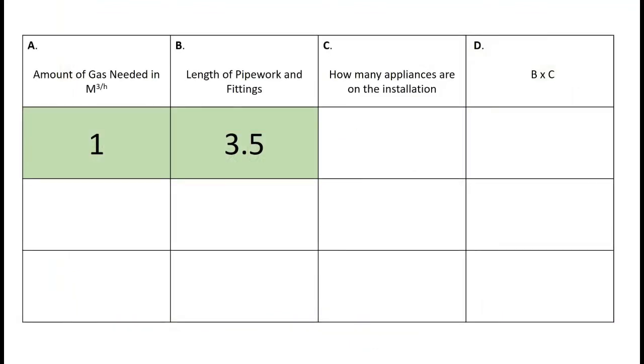Once we've added those two together, the 2.5 meters of pipe plus the one meter accounting for the elbows, we end up with 3.5 meters of pipe. The next thing is how many appliances are on the installation. In our case there's only one appliance.